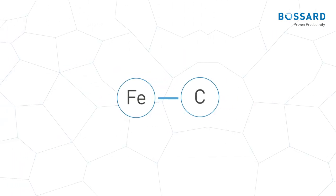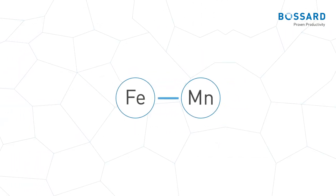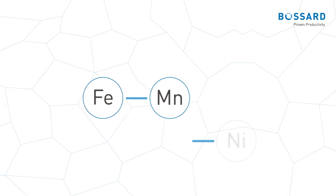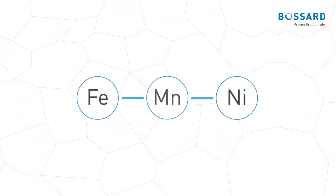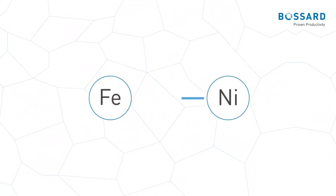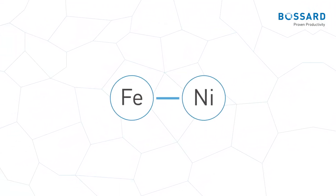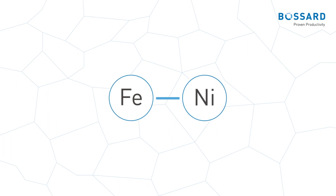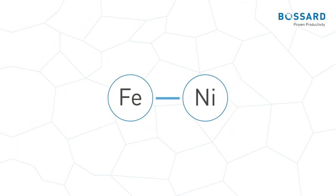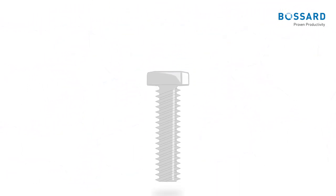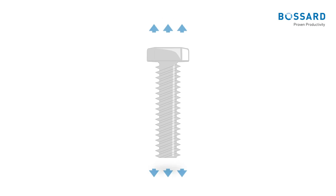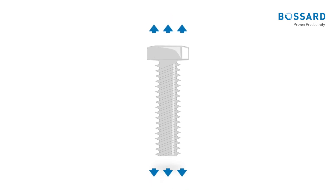Hydrogen embrittlement of fasteners is typically associated with carbon and alloy steels, but other metals and alloys can also be affected. For the fastener, hardness is an essential parameter.